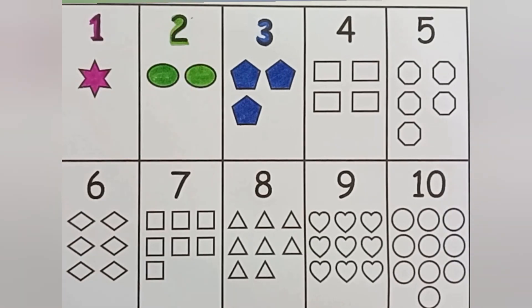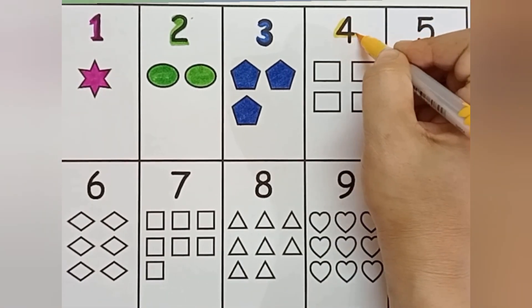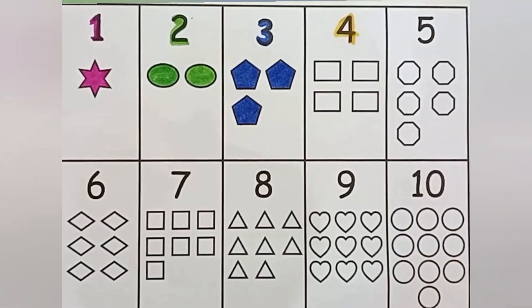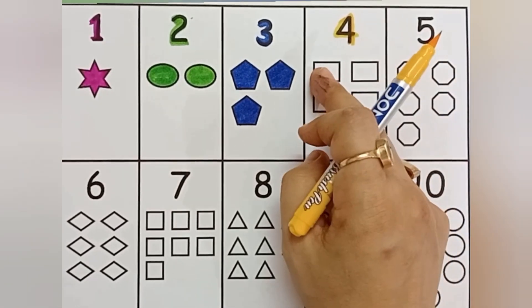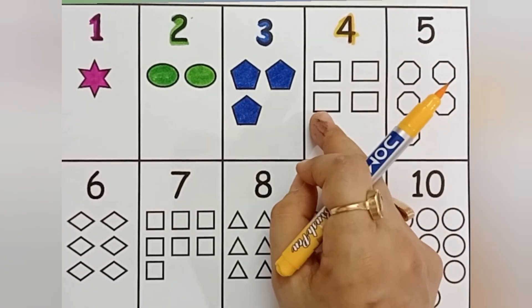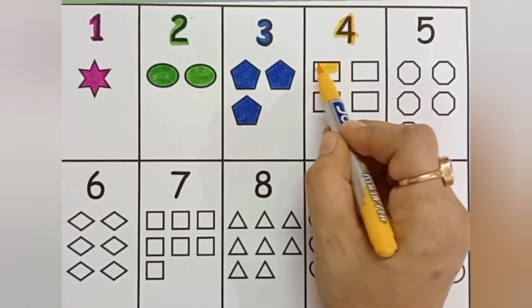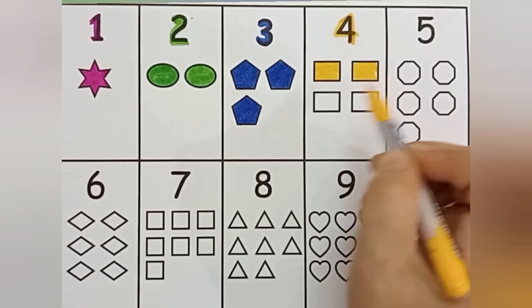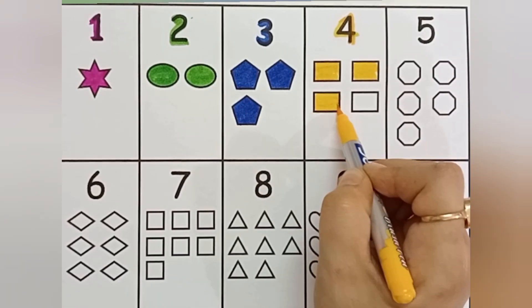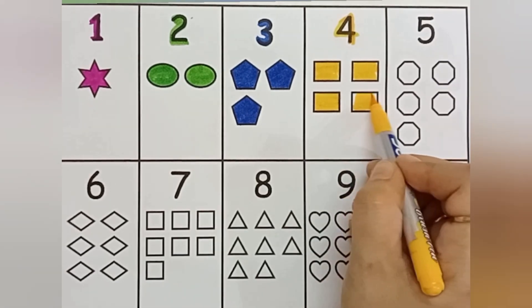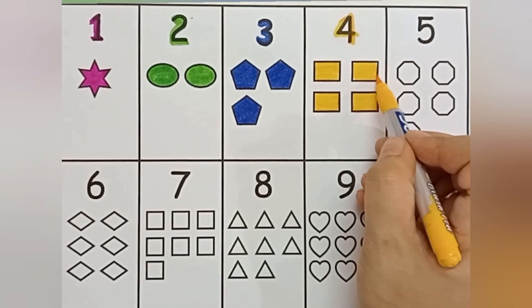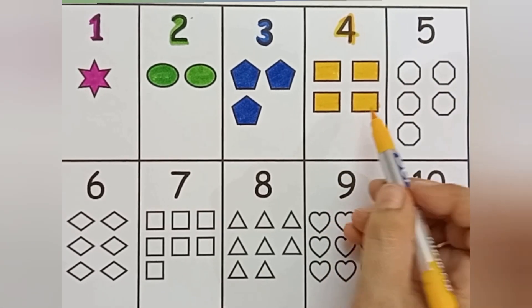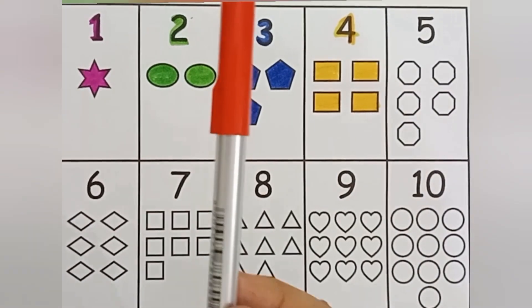Yellow color. Four — number four. Rectangle. One, two, three, four — rectangle. Yellow color. Red color.